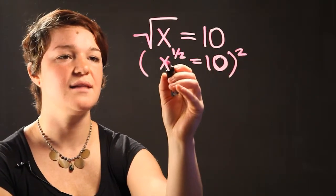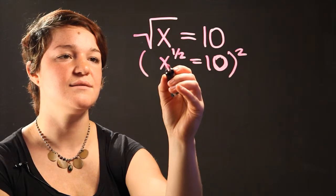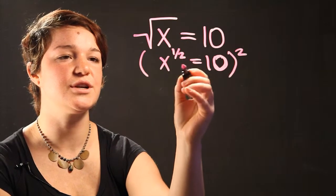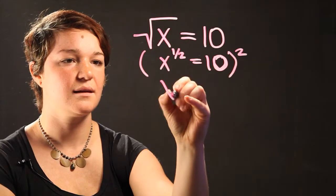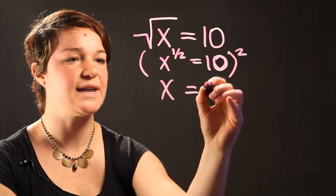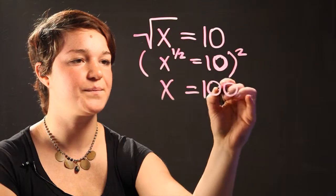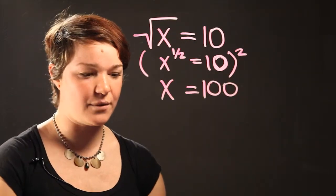When you square it, then the x variable is going to turn into just x, not the radical of x. And when you square 10, it's 100. So we solved that one.